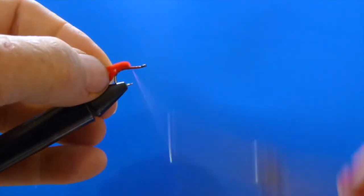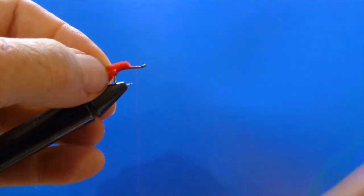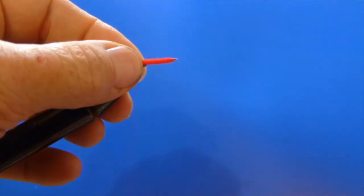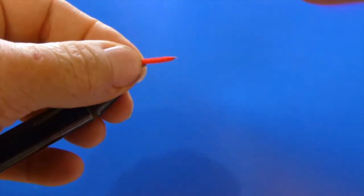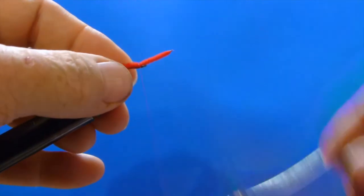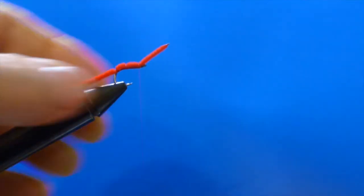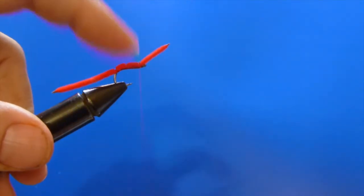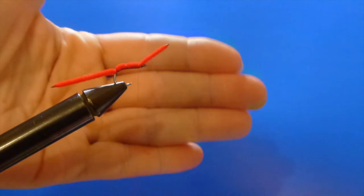Give it a few wraps, pull it back again, move our thread towards the eye, and then we're going to tie it in a third time. See how easy this is? And as you can see, we kind of have three segments there where we tied it into the hook.